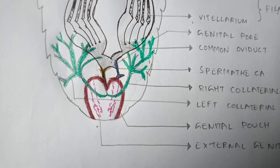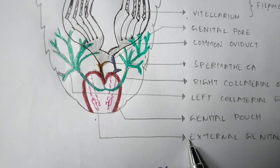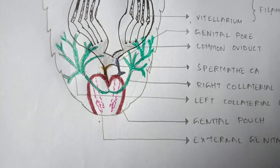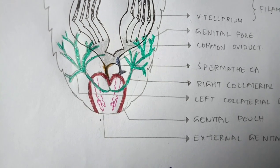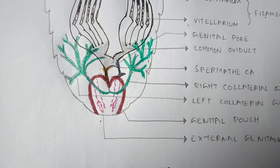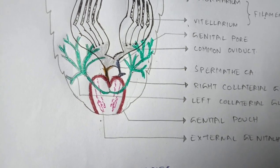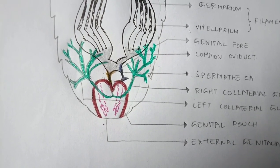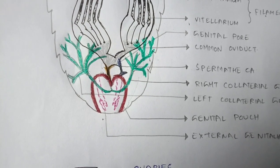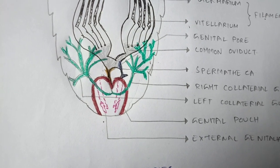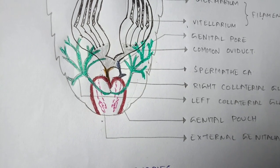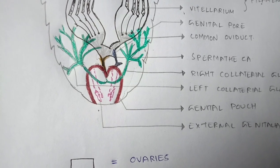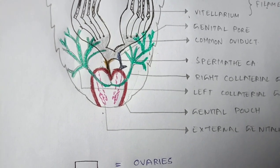Finally, the external genitalia, represented in pink color, present in the last abdominal segment. The female cockroach has three pairs of chitinous structures known as gonapophyses. They can be visible with the naked eye and are present around the genital pore. They guide the ova and hence are also known as ovipositors.